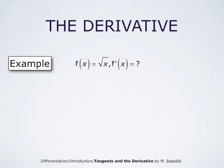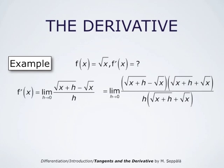The function is square root of x, and our task is to compute the derivative of this function at a general point x. This derivative is the limit as h goes to zero of square root of x plus h minus square root of x divided by h. Now, if we plug in h equals zero, we get zero divided by zero, which is undefined. So we have to multiply and divide by the conjugate of the square root expression — that is, by square root of x plus h plus square root of x. When we do that, the numerator becomes x plus h minus x, and the denominator is h times square root of x plus h plus square root of x.